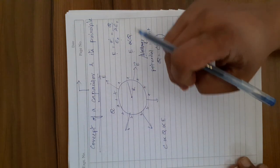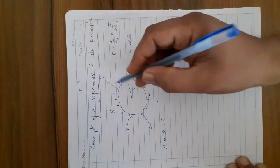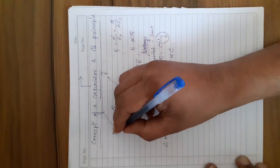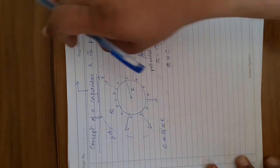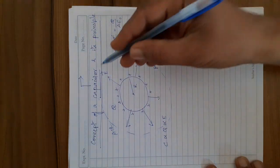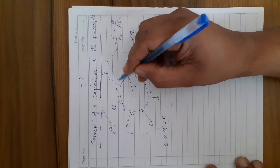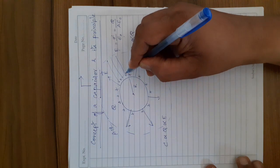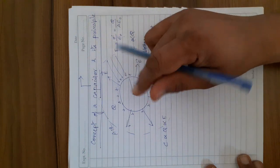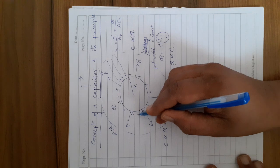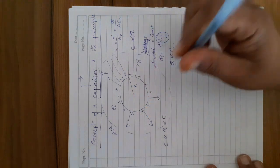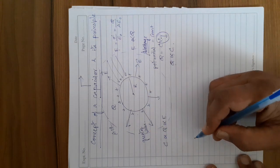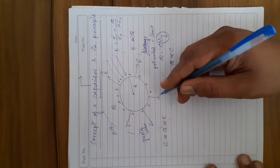Now here is the actual problem. This conductor is surrounded by air. Without knowing the consequences, you are giving charge to the conductor continuously. At a certain stage, what happens? The electric field will have a large value, so large that it starts ionizing the air around the conductor.